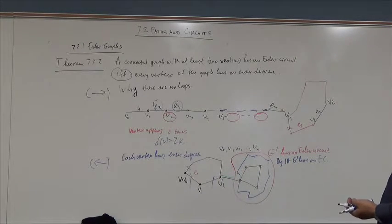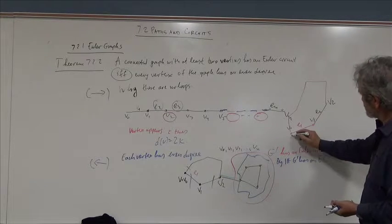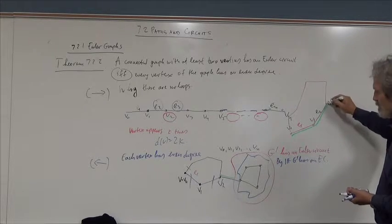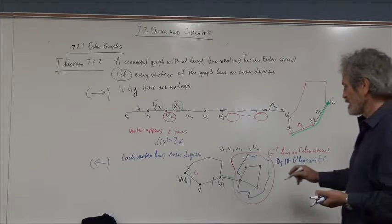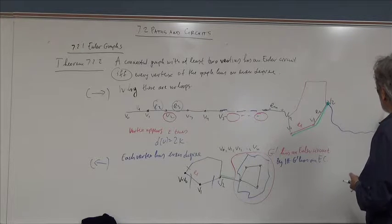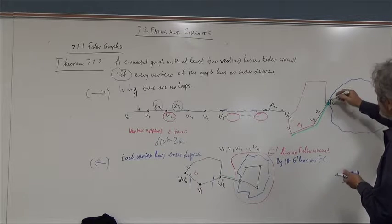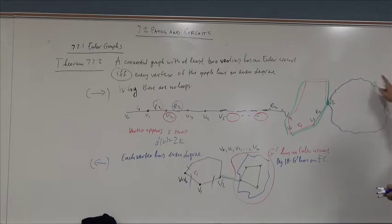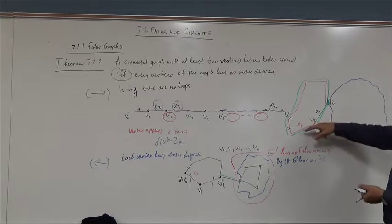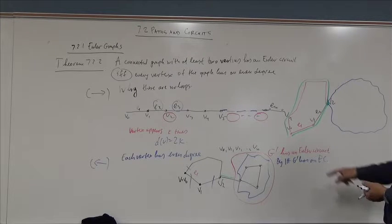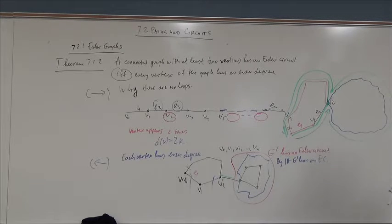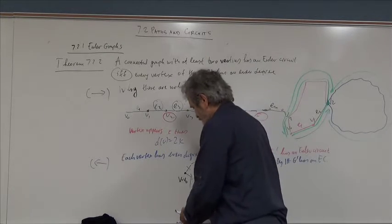Since the original graph is connected, there must be a connection point between the first cycle and G′. We traverse the first cycle until we reach that connection vertex, detour through the Euler circuit of G′, return to the connection vertex, and continue the first cycle. This combined route traverses every edge exactly once and forms an Euler circuit for the whole graph.